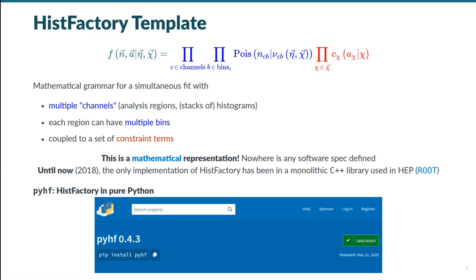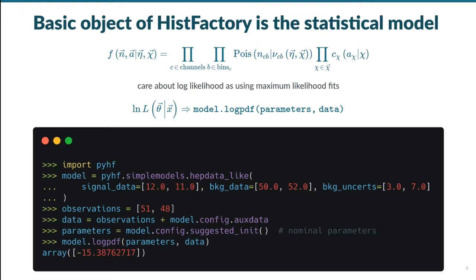No software specification is defined anywhere, but until very recently in 2018, the only implementation that existed of HistFactory was in the monolithic C++ library called Root that has been the computational backbone of experimental high-energy physics for almost 25 years. The change was the creation of PyHF, the first pure Python implementation of HistFactory, which as you can see below is just a pip install away on PyPI and openly developed on GitHub.